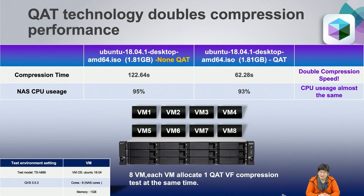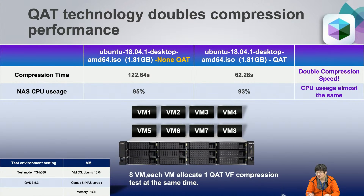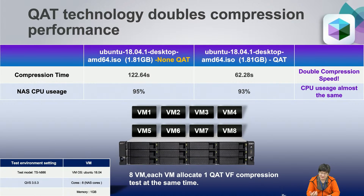QAT technology is created by Intel and doubles compression speed. We tested compressing an Ubuntu OS image. The baseline compression time is 122 seconds, but if you use the QAT function, compression time drops to 60 seconds — that is double the compression speed. And the NAS CPU usage remains almost the same.